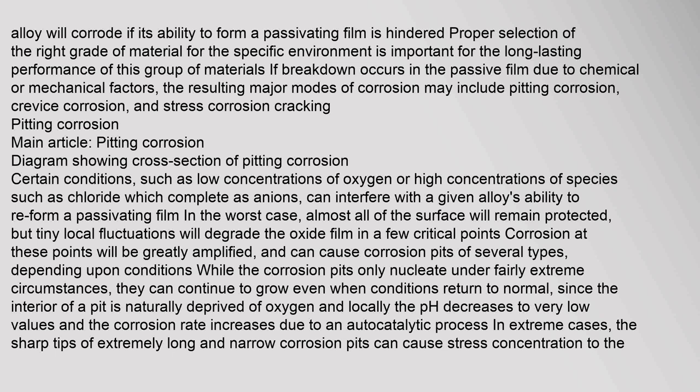Pitting corrosion — main article. A diagram shows a cross-section of pitting corrosion. Certain conditions, such as low concentrations of oxygen or high concentrations of species such as chloride which compete as anions, can interfere with a given alloy's ability to re-form a passivating film. In the worst case, almost all of the surface will remain protected, but tiny local fluctuations will degrade the oxide film in a few critical points. Corrosion at these points will be greatly amplified and can cause corrosion pits of several types. While corrosion pits only nucleate under fairly extreme circumstances, they can continue to grow even when conditions return to normal, since the interior of a pit is naturally deprived of oxygen.